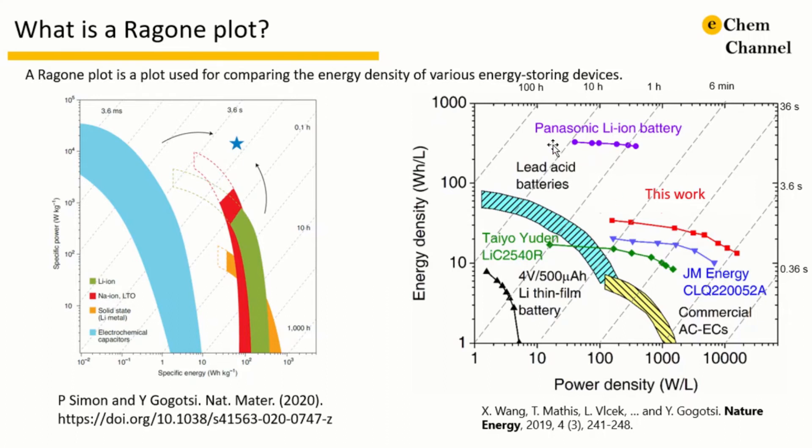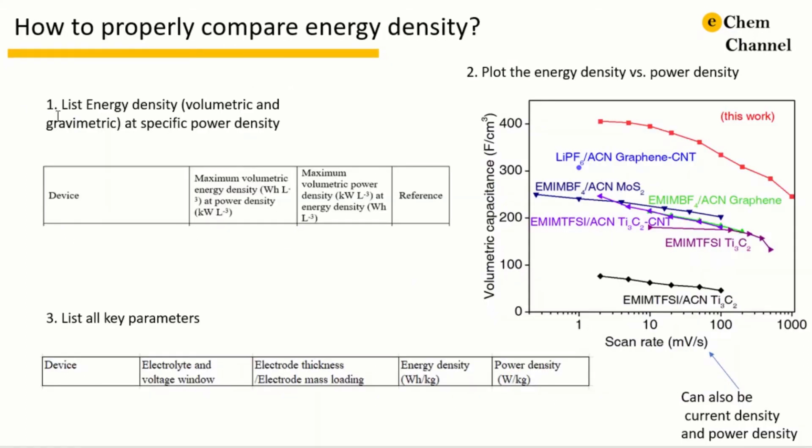One can also report the energy density and power density of the active material and compare with other devices reported in the literature without plotting the Ragone plot.